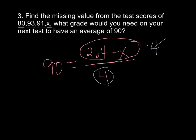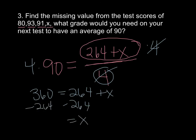So I'm going to multiply by 4 so they cancel. Now if I multiply one side by 4, I also have to multiply the other side by 4. So this gives me 360 equals 264 plus X, subtract 264, and X equals 96. So you would have to get a 96 on your test to have an average of 90 on your overall grade.